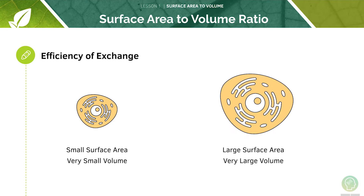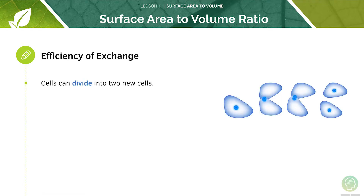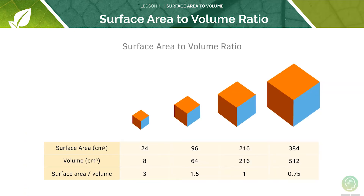As cells grow, their surface area to volume ratio will decrease, decreasing the efficiency of their exchange. Cells can divide into two new cells and provide a greater surface area to volume ratio. As an object increases in size, its surface area to volume ratio is going to decrease.